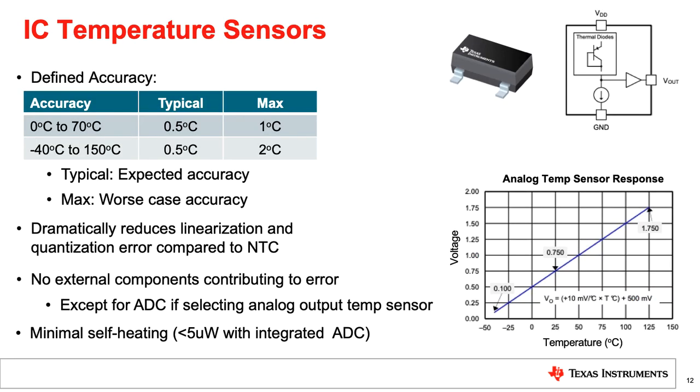Let's move on to IC temperature sensors. One of the benefits of an IC temperature sensor is that it does provide a defined temperature accuracy across a broad temperature range. In most data sheets, you'll see two values listed, a typical accuracy and a max accuracy. Typical represents the expected accuracy that will be achieved for any given unit. Max is the worst case value. To ensure enough design margin, it's recommended to follow the max spec.